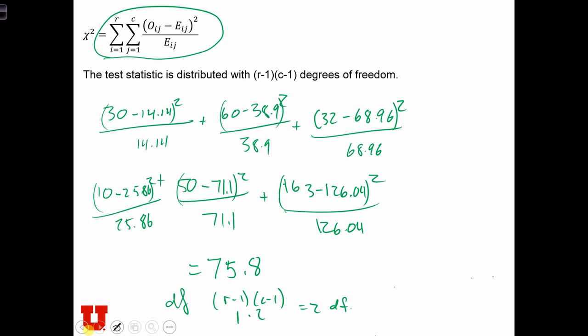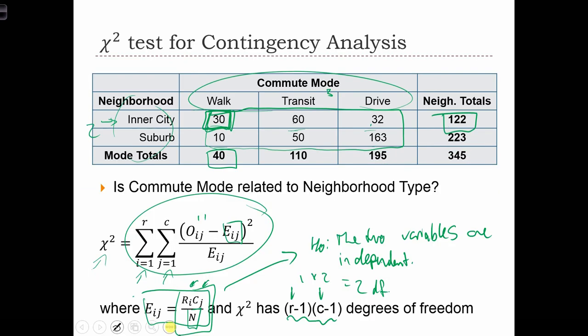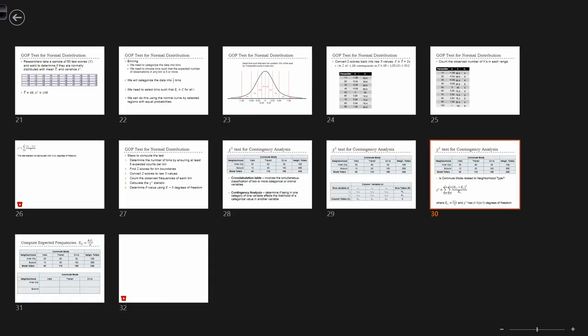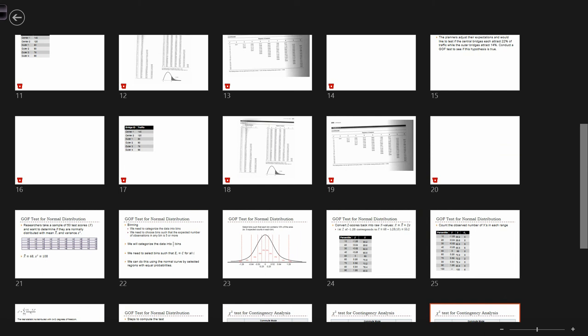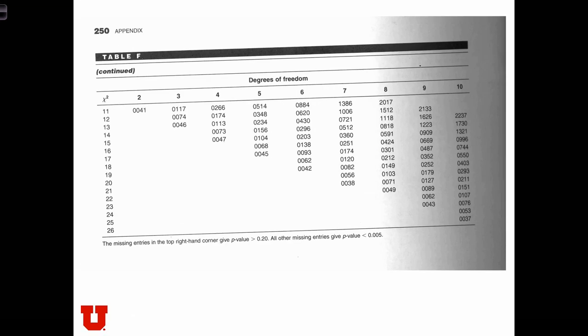So let's go to our table of probabilities. So I'm going to zoom out here to find them. So we have 2 degrees of freedom. And our chi-squared value was way down here at 75.